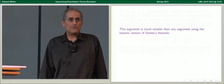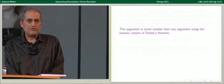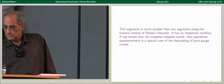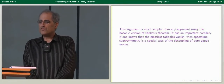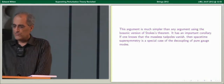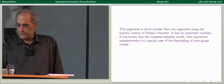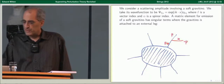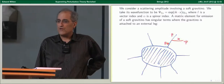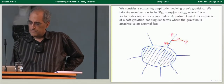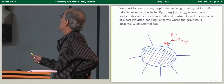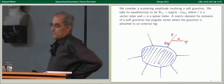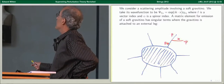What was mostly done in the 80s was to try to reduce to the bosonic version of Stokes' theorem — it's not wrong, but it makes the arguments extremely untransparent. The proof of gauge invariance has an important corollary: if one knows that the massless tadpoles vanish so that the amplitudes make sense, then spacetime supersymmetry is a special case of the decoupling of pure gauge modes. This may be deduced from an argument that is valid in string theory but totally unstringy. We consider a scattering amplitude involving a soft gravitino, taking its wave function to be a plane wave times a polarization object with both a vector and spinor index, which I call eta_{i alpha}.